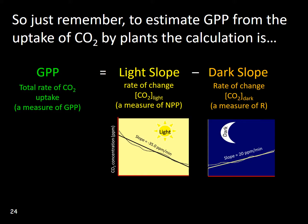To determine gross primary productivity, or total photosynthetic rate, we must add the rate of respiratory release of carbon dioxide in the dark to the rate of uptake of carbon dioxide in the light — which is net primary productivity. Remember that NPP is a negative number because our CO2 sensors were measuring how much carbon dioxide was being sucked out of the biochamber by the leaves. So, to add the dark respiratory measure to the light measure, we must add in the negative direction — this is done by subtracting the dark slope from the light slope.